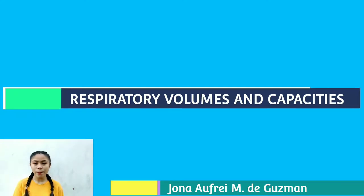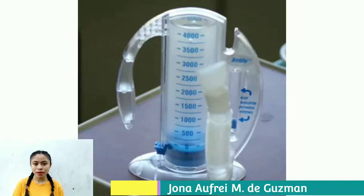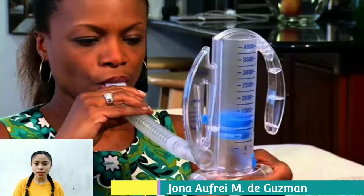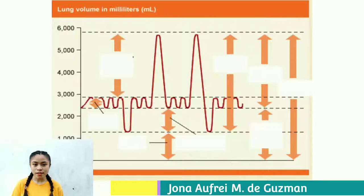Spirometry is the process of measuring volumes of air that move into and out of the respiratory system. A spirometer is the device that measures these respiratory volumes. Measurements can provide information about the health of the lungs. Respiratory volumes measure the amount of air movement during different portions of ventilation. Respiratory capacities are the sums of two or more respiratory volumes, and the total volume of air in the respiratory system ranges from 4 to 6 liters.